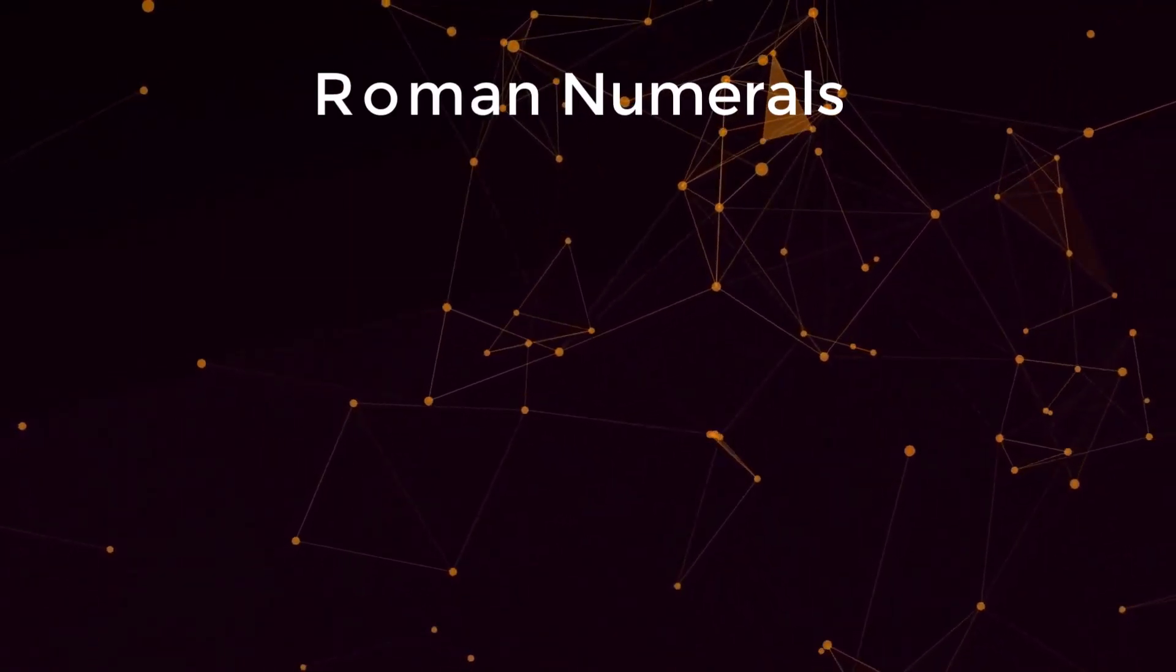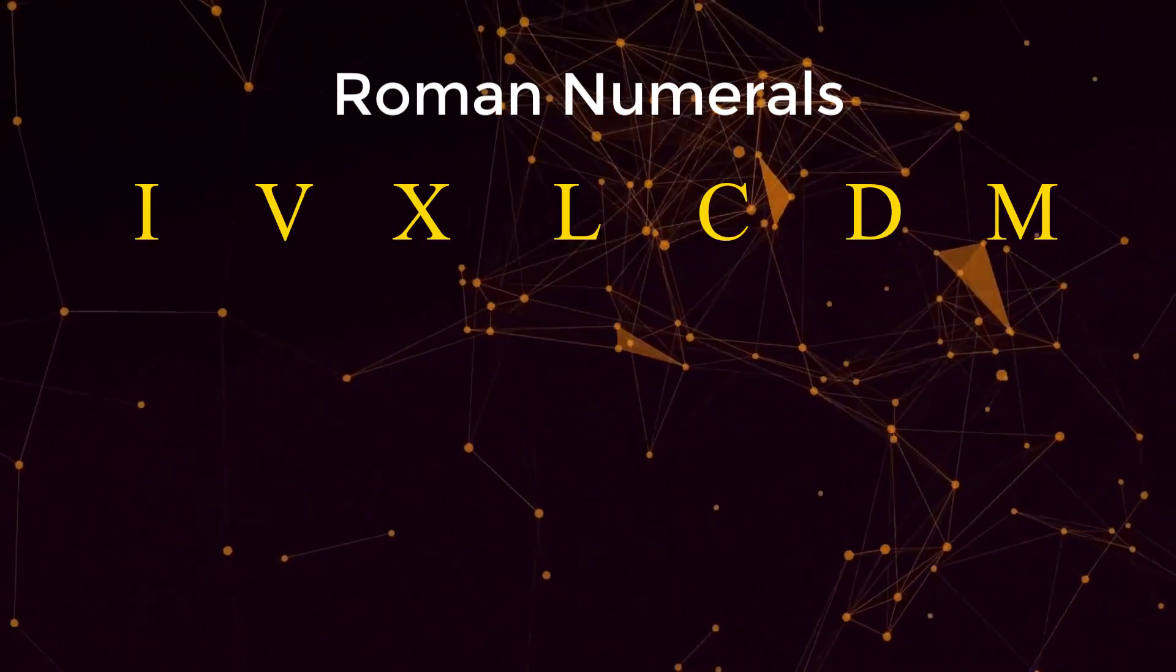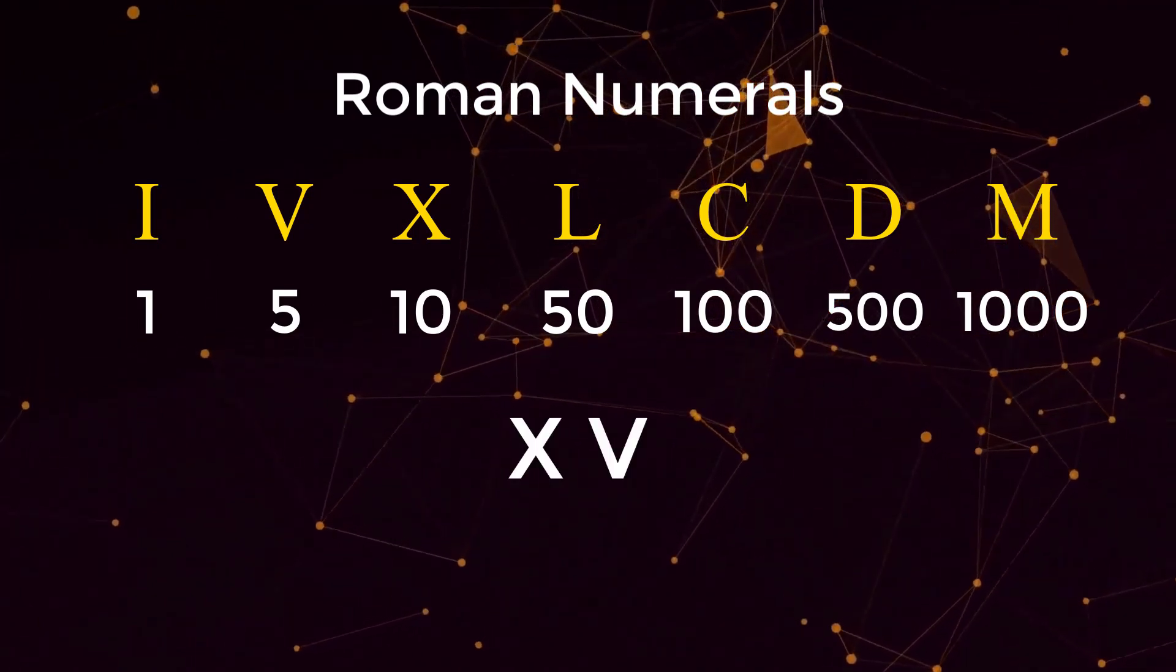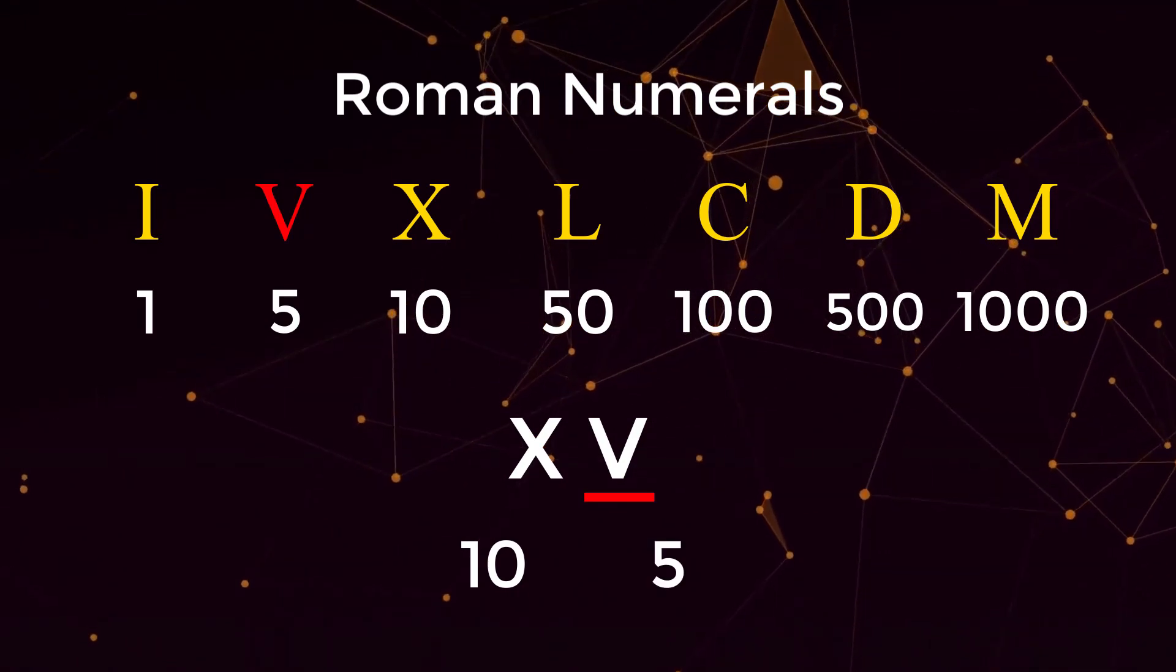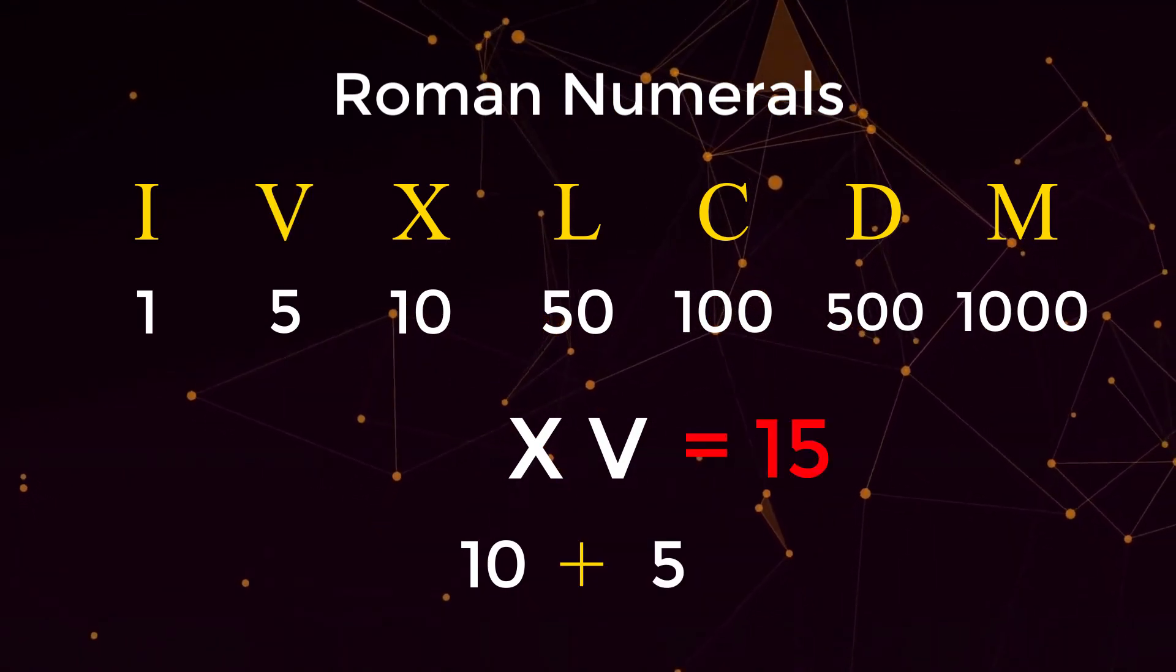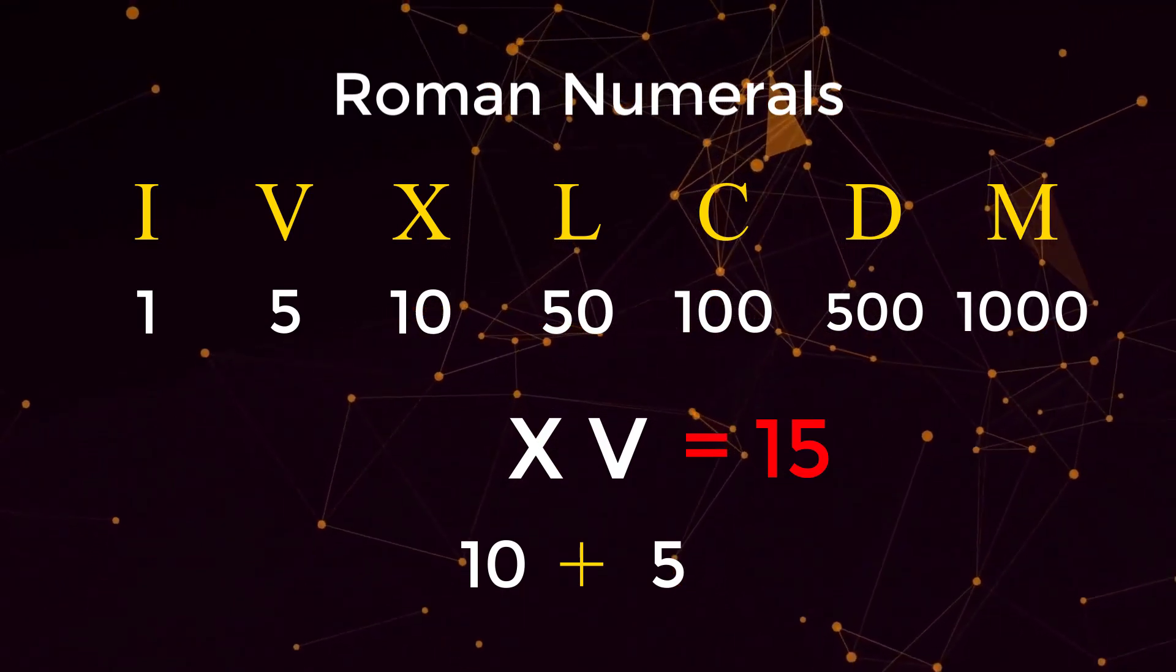Roman numerals have seven different symbols: I, V, X, L, C, D, and M. Each numeral corresponds to the following values. So if we had the string XV, X is equal to 10, V is equal to 5, and then we add both of those values together to get 15. So each individual numeral value we will simply add together to get the total integer value.